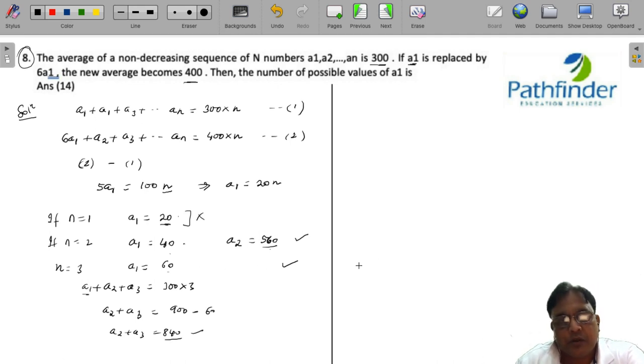So n equals 3 is also a feasible solution. Now we have to find a limiting value of n. Let us see if we can calculate the values when n is equal to 16. If n equals 16, a1, which is 20 times 16, equals 320. Since these are non-decreasing sequence of numbers, a2, a3, a4 must all be greater than a1, that is 320. If all numbers are 320 or greater than 320, then the average cannot be 300.